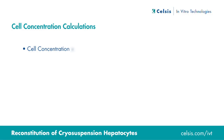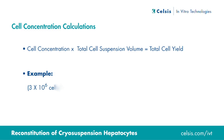To determine the total cell yield, the cell concentration of 3×10⁶ cells per milliliter is multiplied by 2 milliliters, for a total cell yield of 6×10⁶ viable cells.